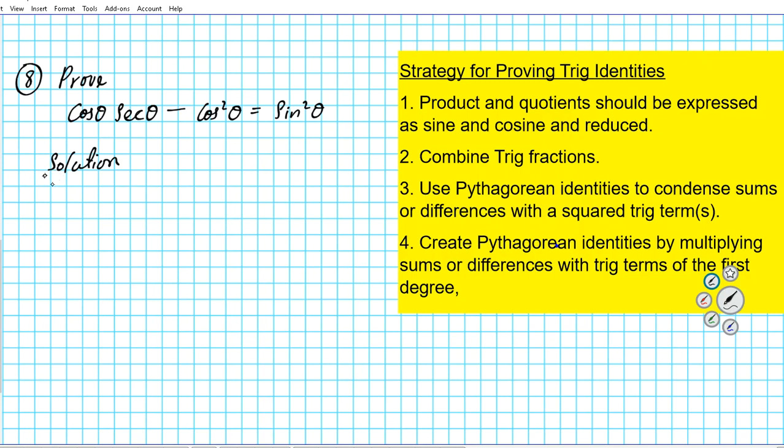Now, if you take a look at the box to your right, you're going to see the strategy that we have been using for the previous problems, problems numbers one through seven, in proving trig identities using the fundamental identities. We're going to be applying the same strategy in solving this problem.